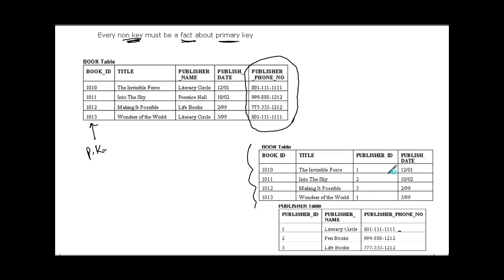So these are the three normal forms. If you look at the original design and what we modified each time, you see we are eliminating redundancies. There are two more forms of normalization available, but they are never much used in industrial practice — mostly theoretical — and those are beyond the scope of this video.